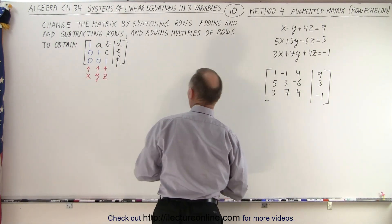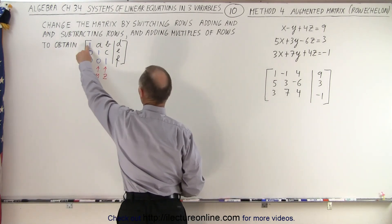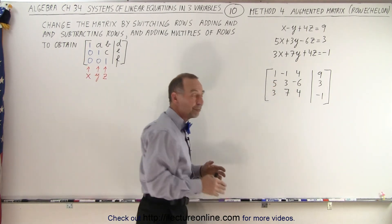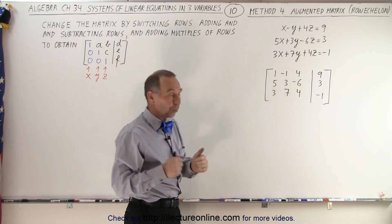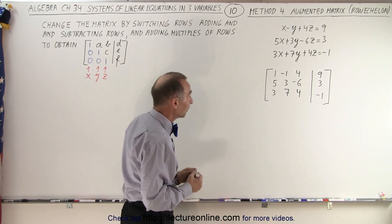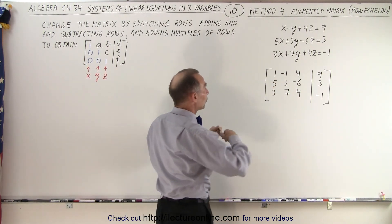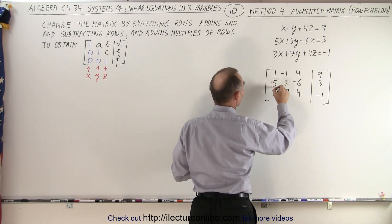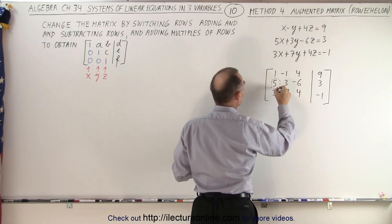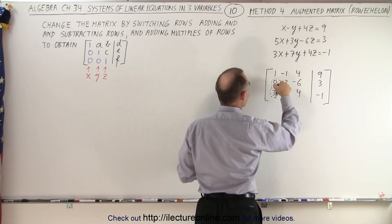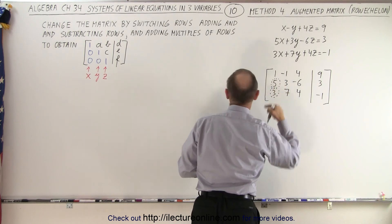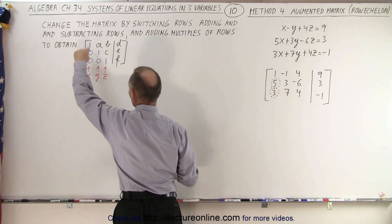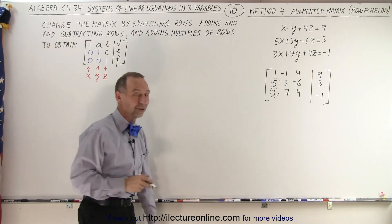We start in the upper left corner. Since that entry is already a 1, we don't have to change it. The next thing we want to do is get rid of the 5 and the 3 below it — turn them both into 0s. So we work on the first column first.